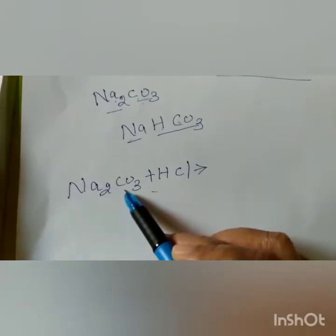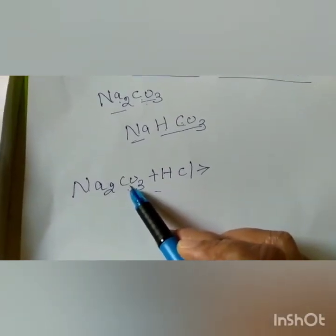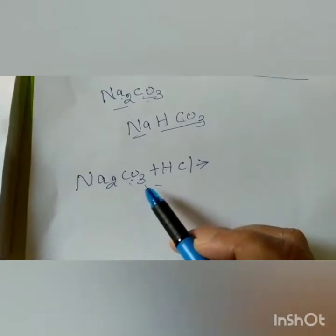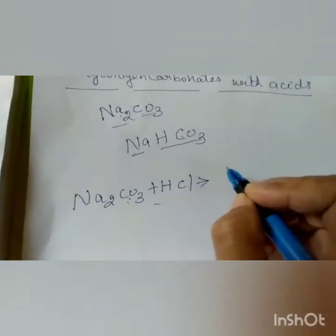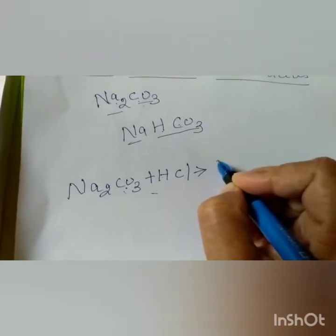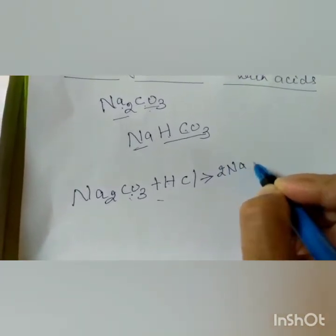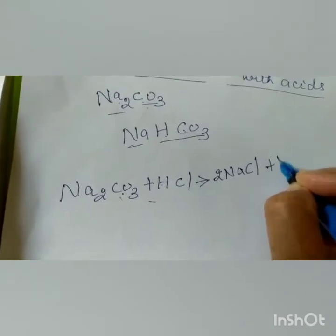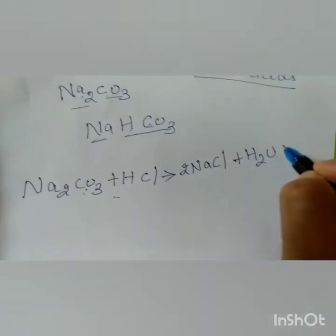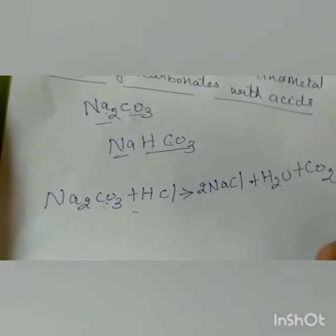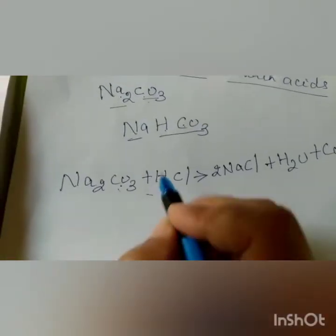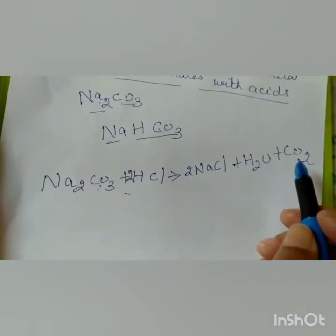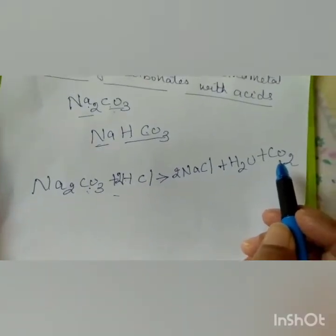Moreover, the carbonate is present here, so from carbonate we will get carbon dioxide gas. We will get water and salt is formed — salt formed is NaCl. The balanced equation gives us NaCl plus water plus carbon dioxide. So carbon dioxide gas is liberated in test tube A.